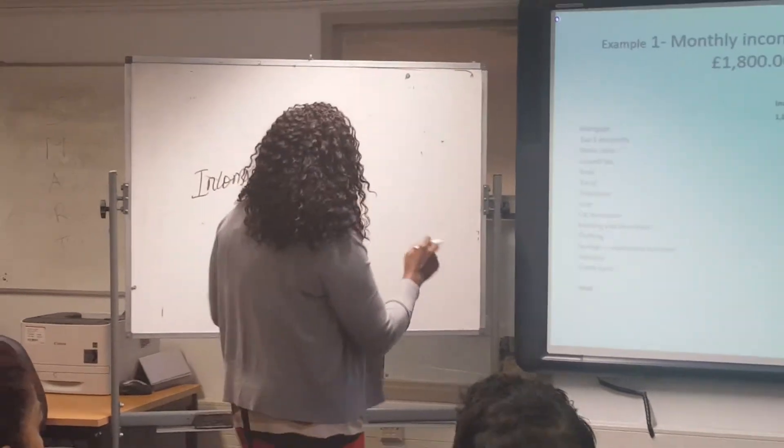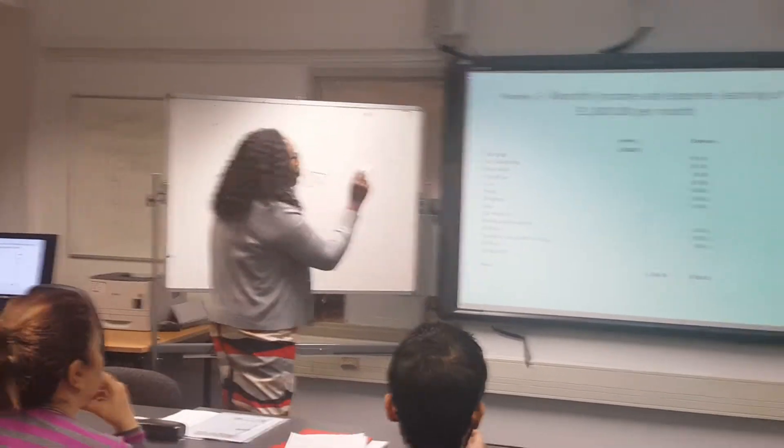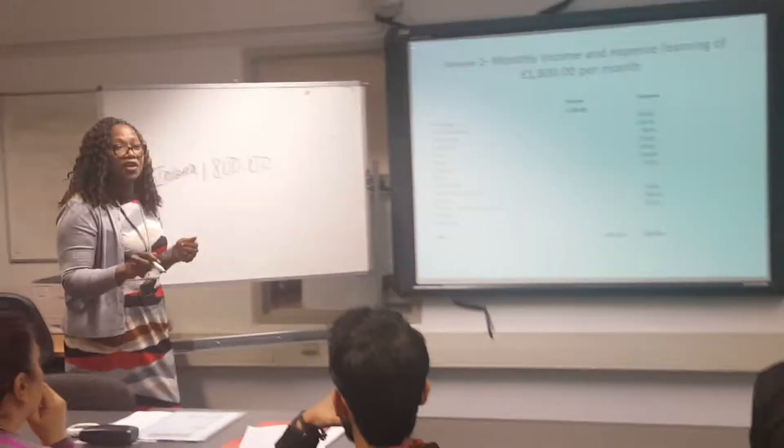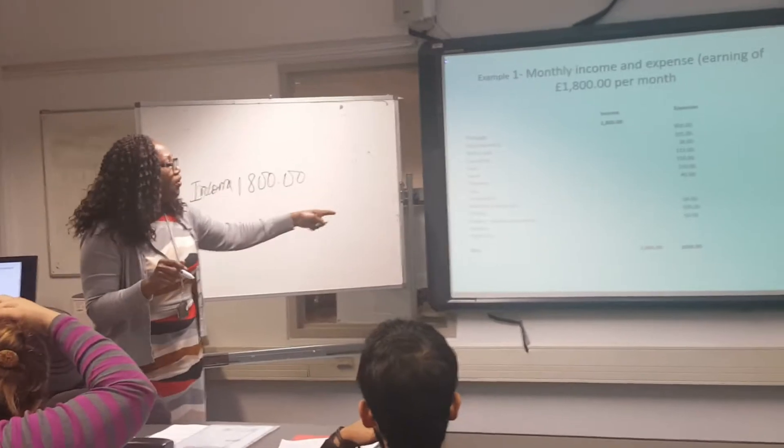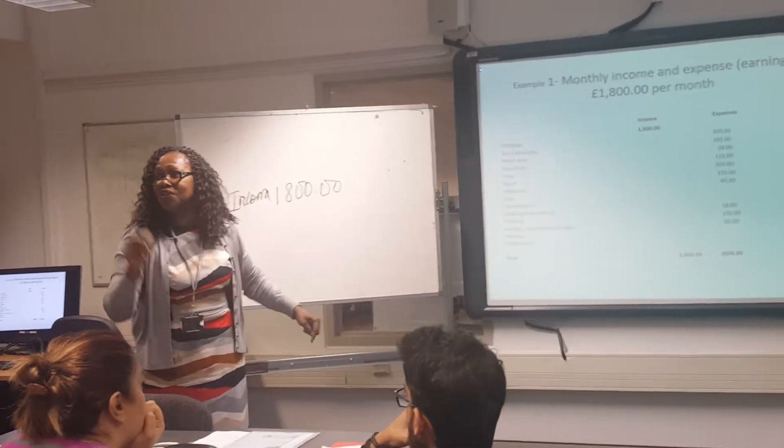What figure did you get? 2006. Okay, that's fine. So that's correct. But what actually happens here? Can anyone tell you what actually happened? This individual income is £1,800 and the expenses came up to £2,600.